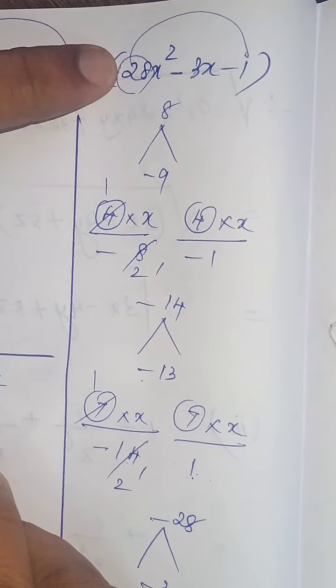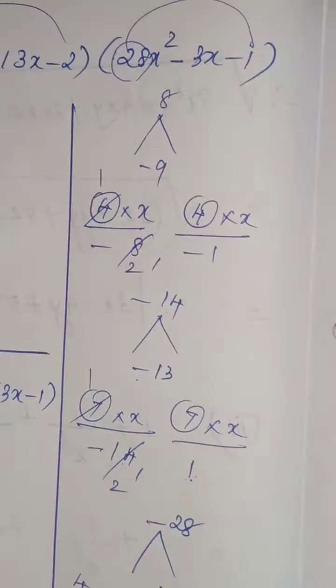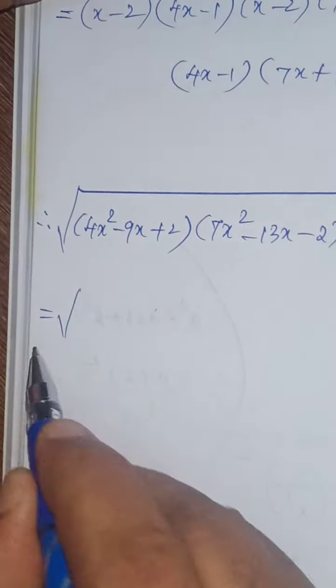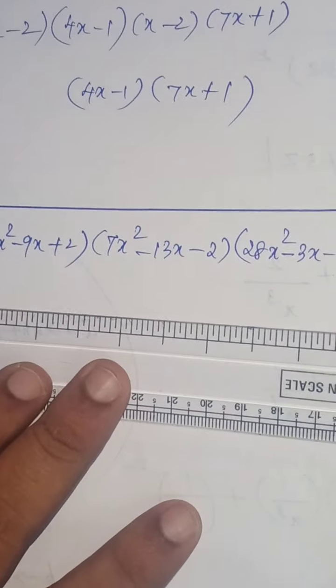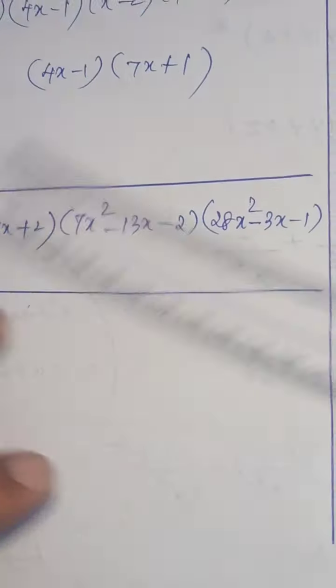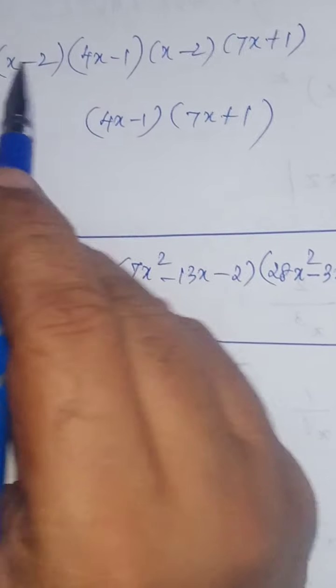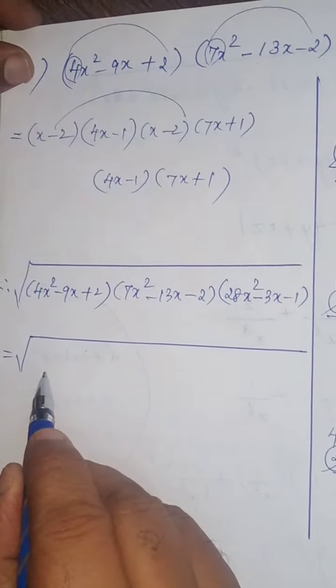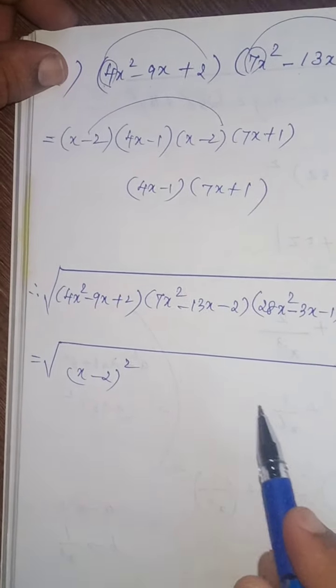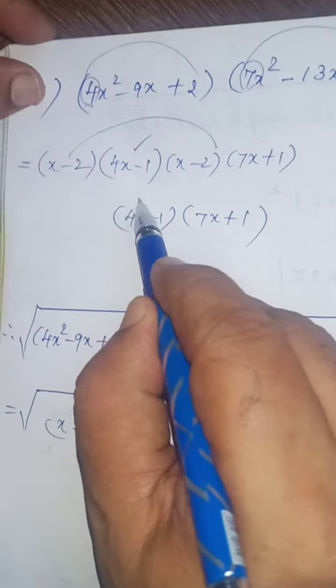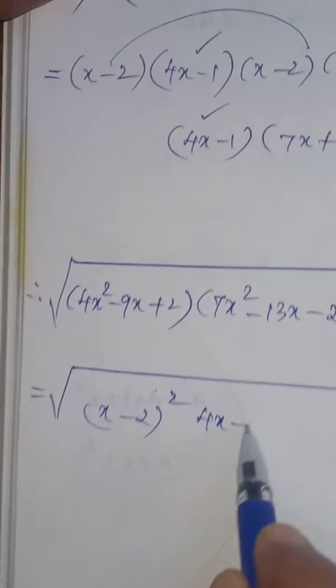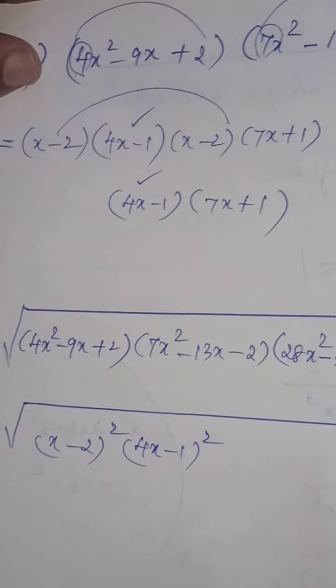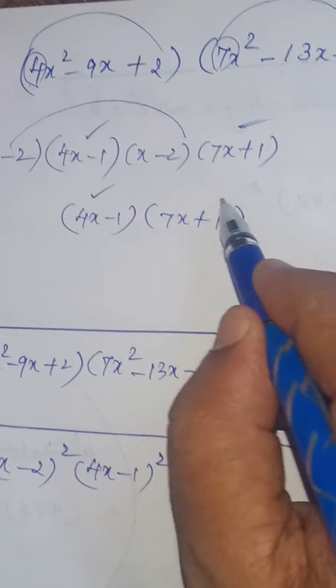x minus 2 into x minus 2 that is x minus 2 the whole square, 4x minus 1 into 4x minus 1 is 4x minus 1 the whole square, 7x plus 1, 7x plus 1 that is 7x plus 1 the whole square.